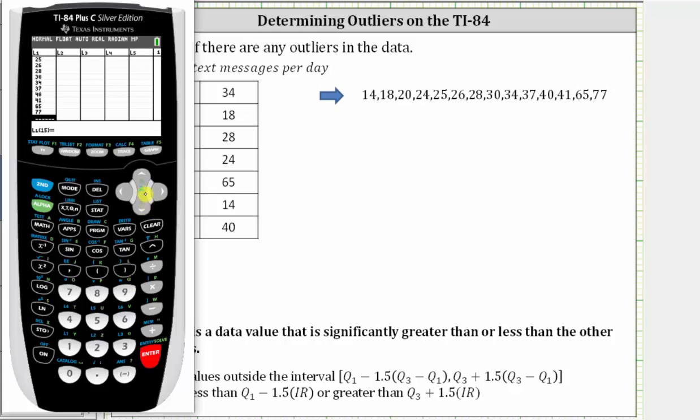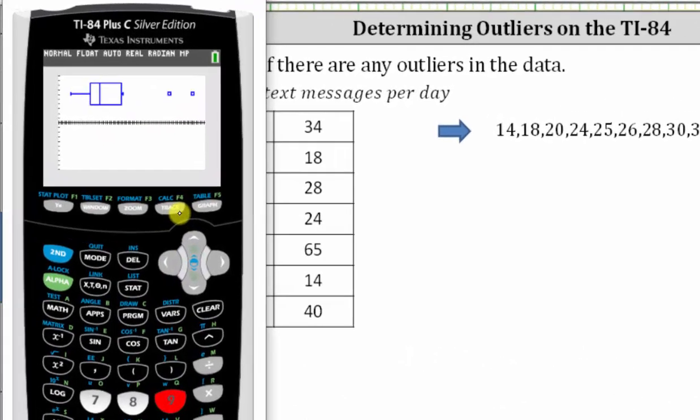Now we already have the stat plot on, but we do need to adjust the window, which we can do automatically by pressing zoom nine. Notice how there are no outliers on the left this time, but we have two outliers on the right. Let's determine those values, press trace.